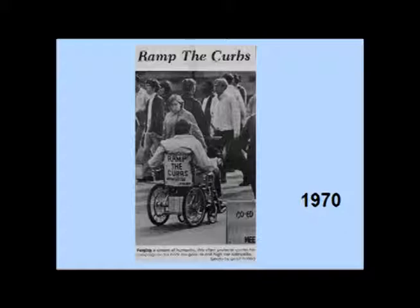Universal design is not new. Here's a newspaper clipping from the Daily, a student newspaper at the University of Washington, from 1970. There was a young man who was quadriplegic and wore a sign on the back of his wheelchair that said, 'Ramp the curbs, keep me off the street.' At the time, ramping all the curbs on the very hilly UW campus seemed like an impossible dream. But as we know, ramping curbs is now just accepted as part of the built environment, and it is possible to make facilities and environments more accessible to people with disabilities.